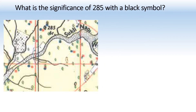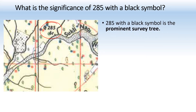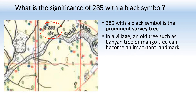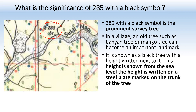What is the significance of 285 with a black symbol? That is a prominent survey tree — shown as a black tree symbol. In a village, an old tree such as a banyan tree or mango tree can become an important landmark. The height is written on a steel plate marked on the trunk of the tree, measured from sea level and shown in meters.